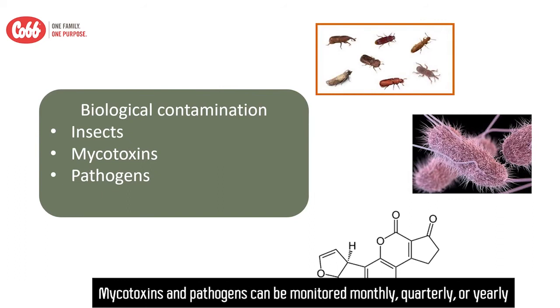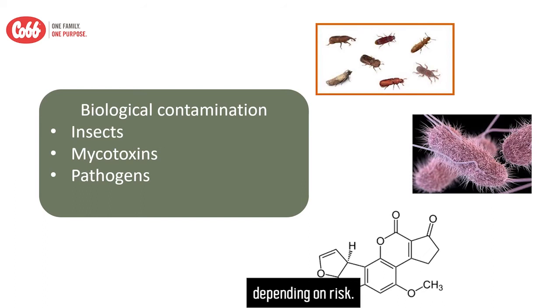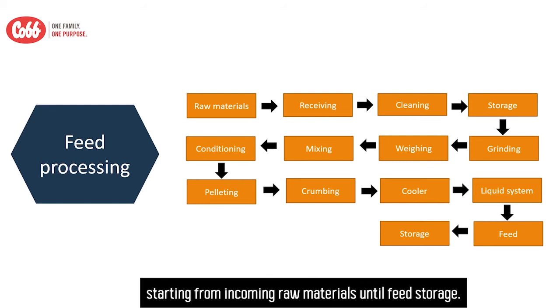Biological contamination includes pathogens, insects, and mycotoxins. Mycotoxins and pathogens can be monitored monthly, quarterly, or yearly, depending on the risk level.